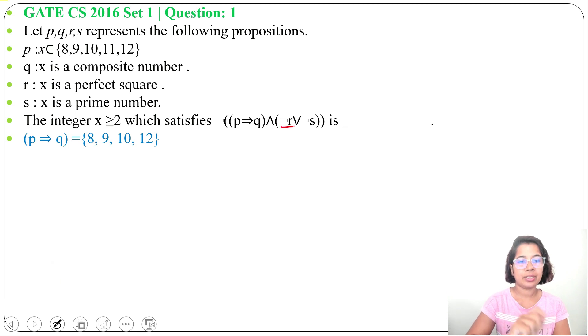Next we will find ¬R. What is R? X is a perfect square. From this set, only 9 is a perfect square. So R is {9}. Now ¬R will be except 9: {8,10,11,12}.